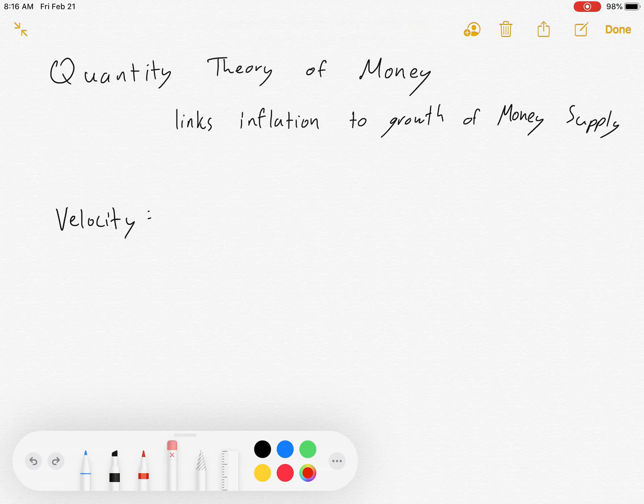We're going to start with this concept of velocity. Velocity measures how fast money moves around the economy. We're going to define it as V equals T over M, where T is the value of all transactions.